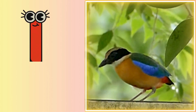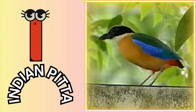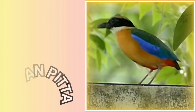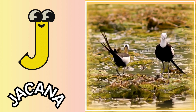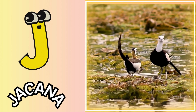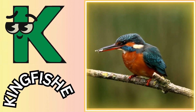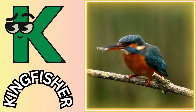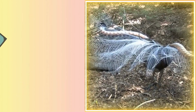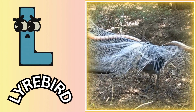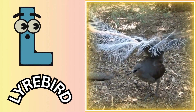I is for Indian Pitta. I, I, Indian Pitta. J is for Jacana. J, J, Jacana. K is for Kingfisher. K, K, Kingfisher. L is for Lyrebird. L, L, Lyrebird.